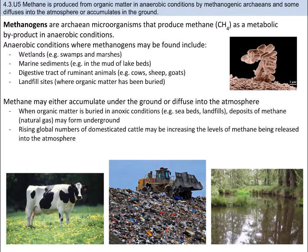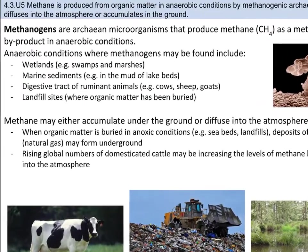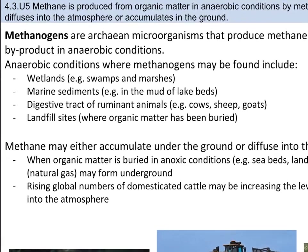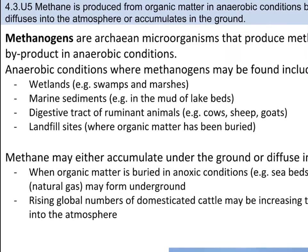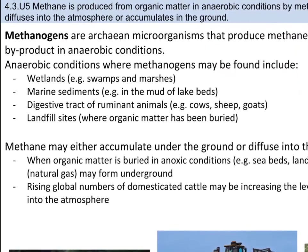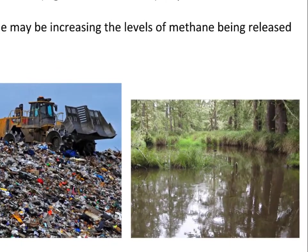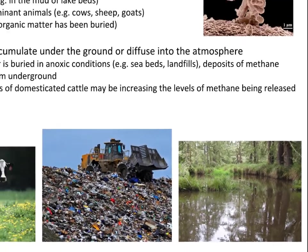Let's talk about the transformation of dead organic material into methane. One of the domains we have are the archaea, and within that are the methanogenic archaea, found in conditions where oxygen is scarce — anaerobic conditions. These methanogens produce methane from the byproducts of anaerobic digestion, principally acetic acid and carbon dioxide. Anaerobic conditions can be found in swamps and wetlands, landfill sites, marine sediments, and ruminant stomachs like those of cows, sheep, and goats. When methanogens make methane, it can be trapped underground as natural gas deposits or released into the atmosphere.